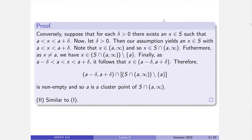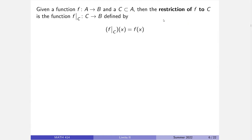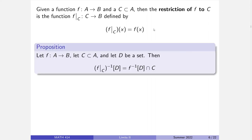With cluster points thoroughly investigated, we have one more thing to do: a quick set-theoretic diversion. Given a function from A to B and a subset C of A, we can form the restriction of F to C by taking the function F defined the exact same way, but the inputs are limited to C. Let's prove a property: the inverse image under the restriction equals the inverse image of the original function intersected with C.